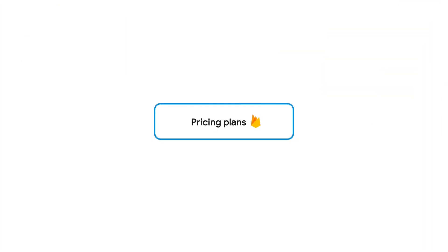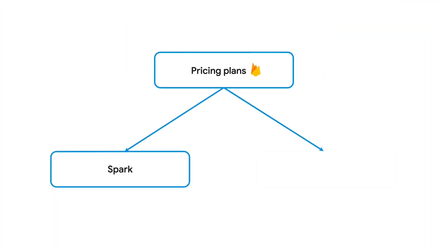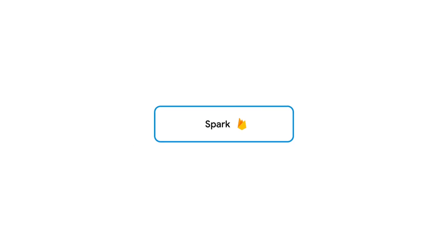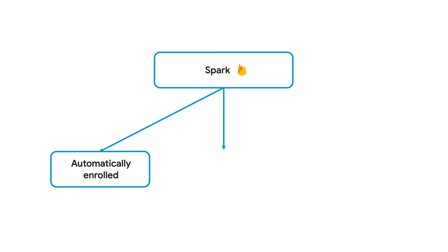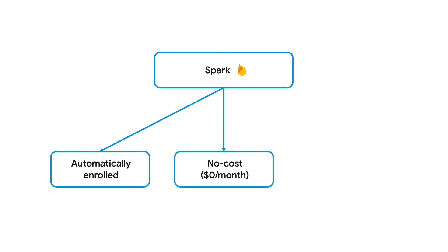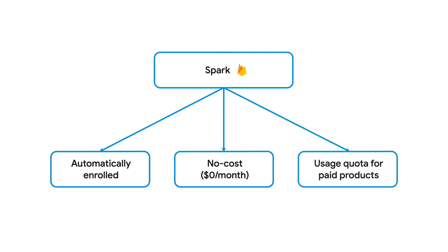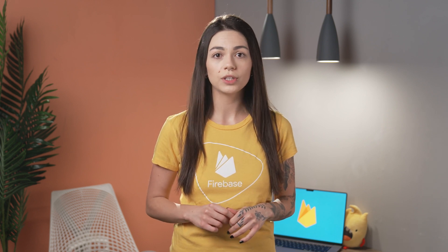Firebase offers two different pricing plans: the Spark plan and the Blaze plan. Spark is the default pricing plan that you are automatically enrolled in when you create a new Firebase project, and it requires no payment information. In this pricing plan, you get full usage of no-cost Firebase products and features and a usage quota for paid Firebase products. This is ideal for the first stages of your application development.